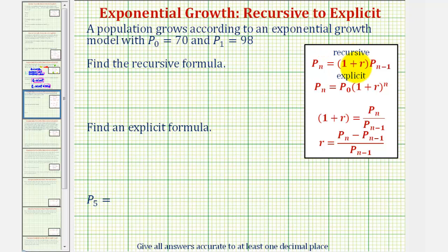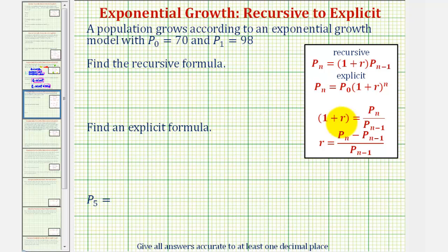Both the recursive and explicit formulas for exponential growth are given here. Notice in both cases we need to find the quantity one plus r, which is the growth factor, or at least r, the growth rate, to find one plus r. So we have the option of using the formula here for the growth factor, one plus r, or we can use this formula here to find r and then find one plus r.